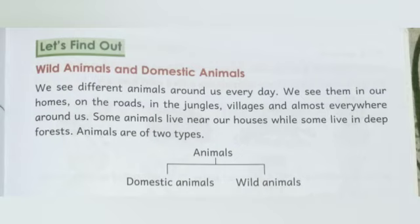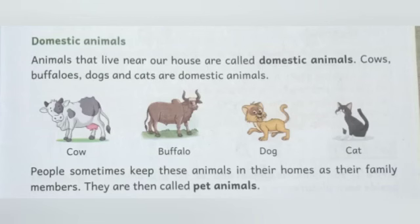First we read about domestic animals. Animals that live near our house are called domestic animals. Domestic animals woh hote hain jo humare ghar ke aas paas rehte hain. For example, cow, buffalo, dog, cat. These are called domestic animals.